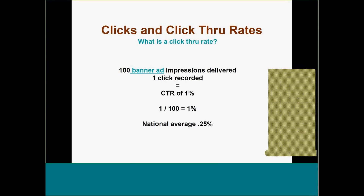Next, you want to know click-through rates. Most of you understand that a click-through rate is tracked — every time someone clicks on a banner ad, it records it in your web delivery system. For example, if you served 100 banner ads for a particular customer and one was clicked on, your click-through rate is 1% — that's 1 divided by 100. The national average click-through rate is 0.25%, encompassing all media sites, commercial sites, business sites — any site that serves a banner ad.